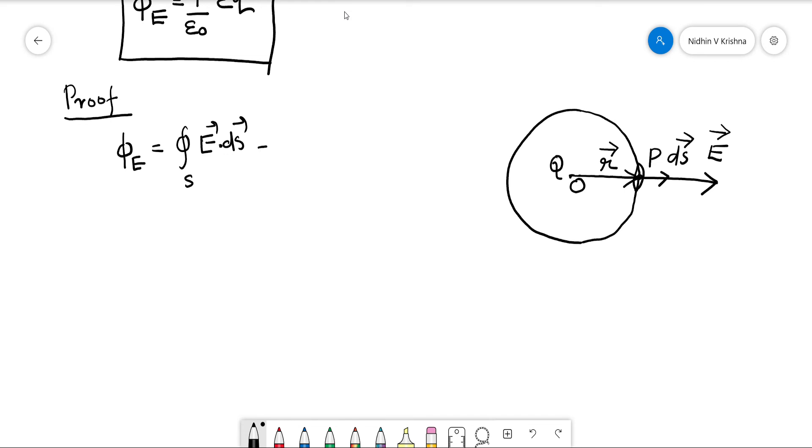That is closed surface integral of E into dS into cos θ. dS vector as well as E vector, E direction, so here θ, that is zero, that means cos θ term is 1.